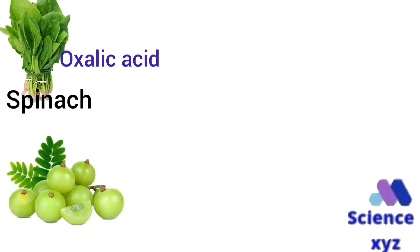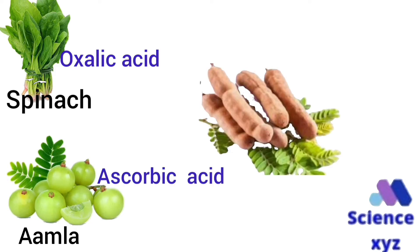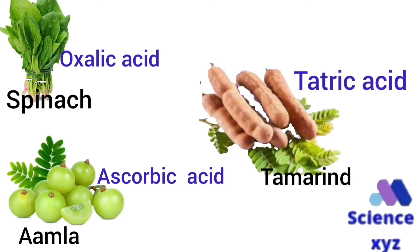Oxalic acid is present in spinach, ascorbic acid (Vitamin C) is present in amla, and tartaric acid is present in tamarind.